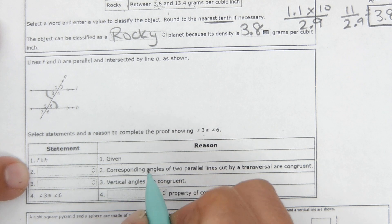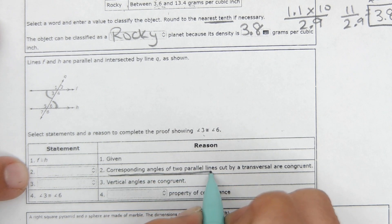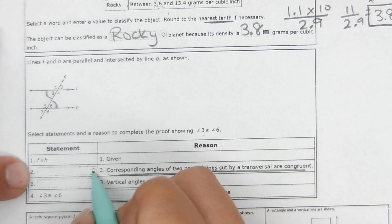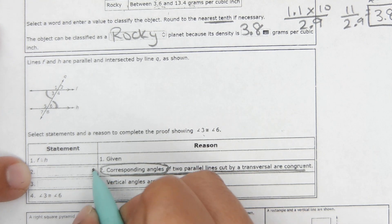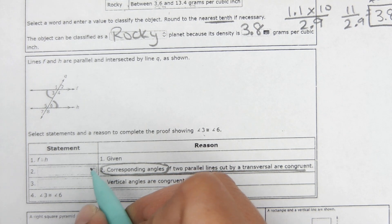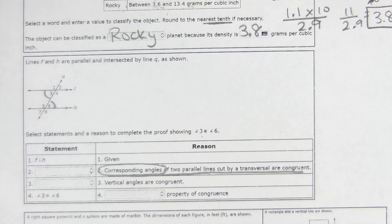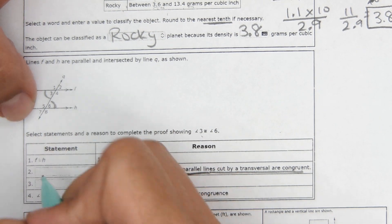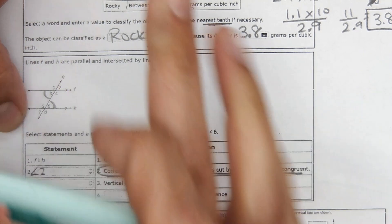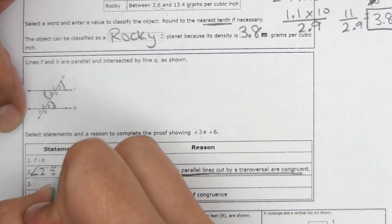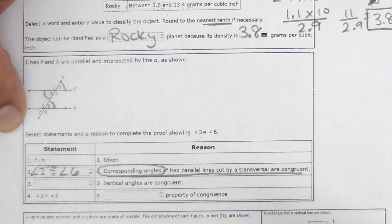Then it says for the reason corresponding angles of two parallel lines are congruent. So when you hit this dropdown, all you're looking for is corresponding angles. So there'll be a bunch of different angle pairs, you're just looking for the ones that are corresponding, and in those choices, it's angle 2 and angle 6. So you can say angle 2 and 6 are congruent because they are corresponding angles.